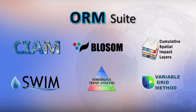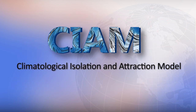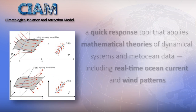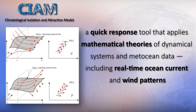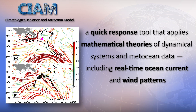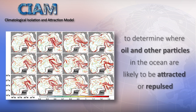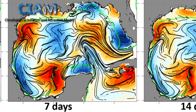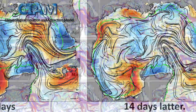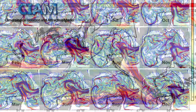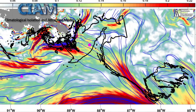The six primary ORM suite components include the following tools and models. The Climatological Isolation and Attraction Model is a quick response tool that applies mathematical theories of dynamical systems and meta-ocean data, including real-time ocean current and wind patterns, to determine where oil and other particles in the ocean are likely to be attracted or repulsed. It looks at patterns, helps you understand areas where the ocean may be riskier, and helps you plan so you can design operations more safely or cost-effectively.